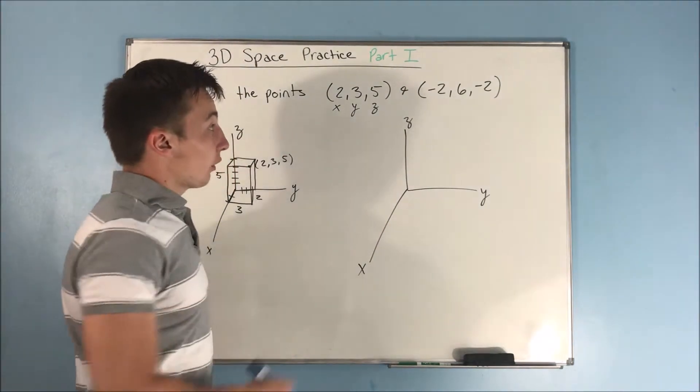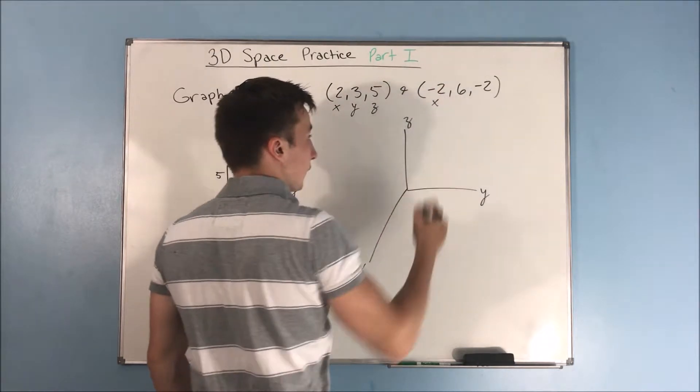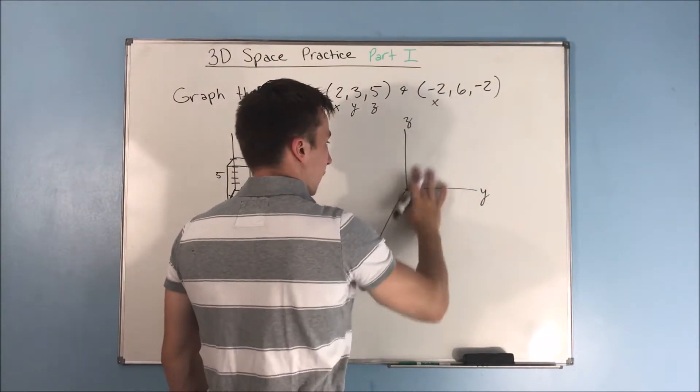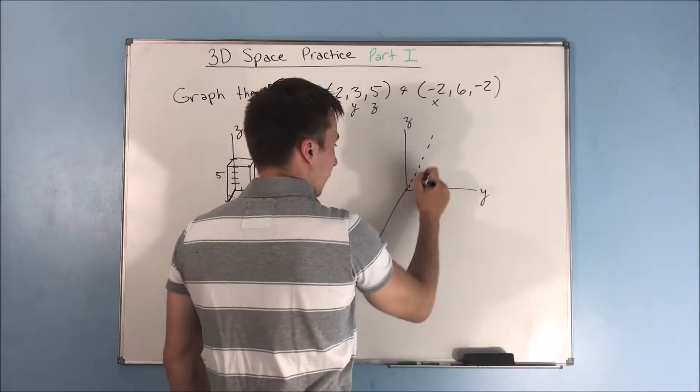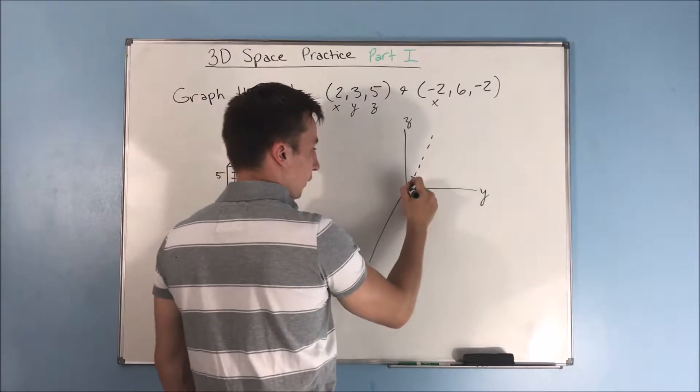The next point that we want to graph is negative 2 comma 6 comma negative 2. So our x is negative 2. We'll go in the, that's a really bad dotted line. There we go. We're going to go in the negative x direction, 2. So we're going to go up here.